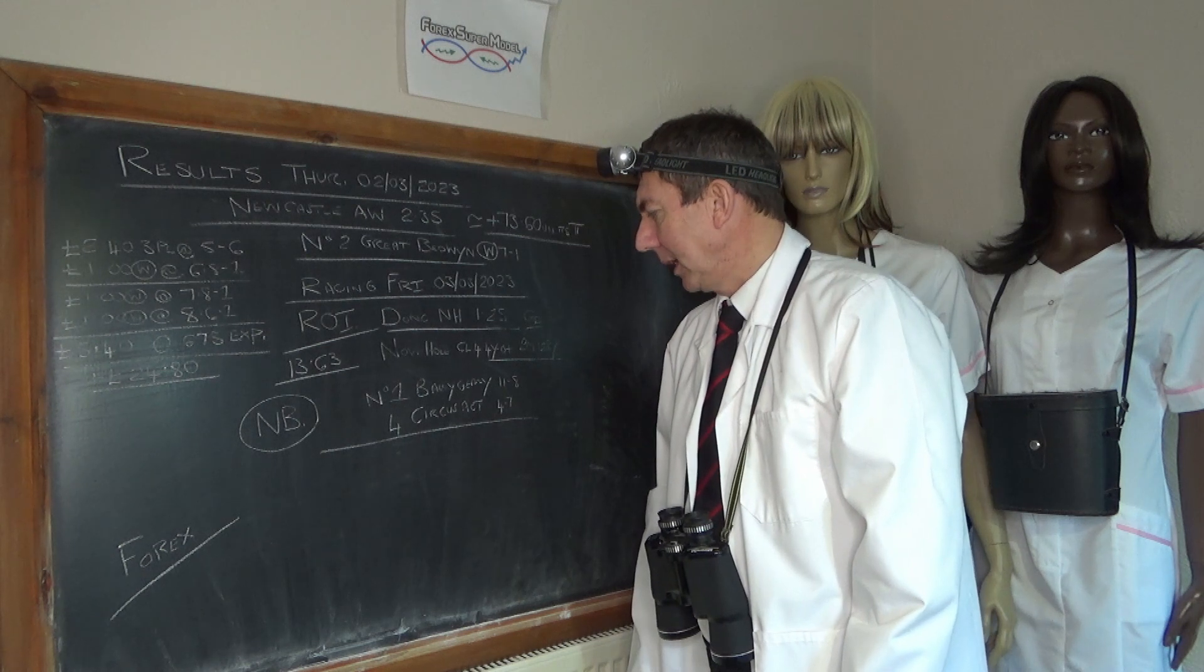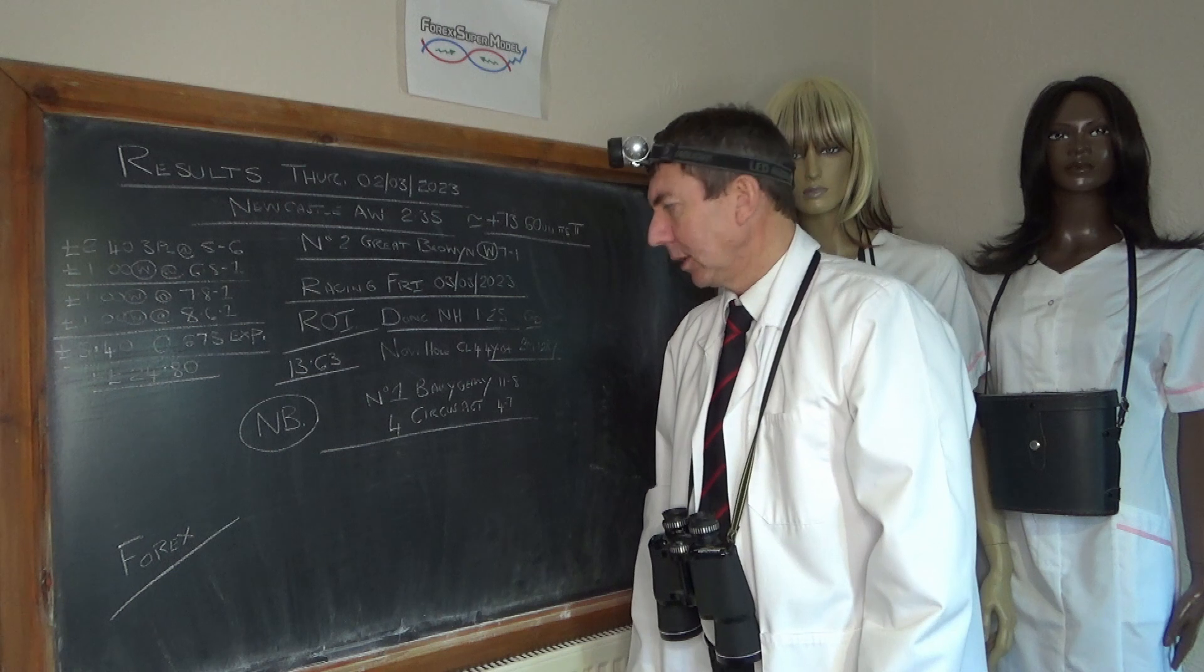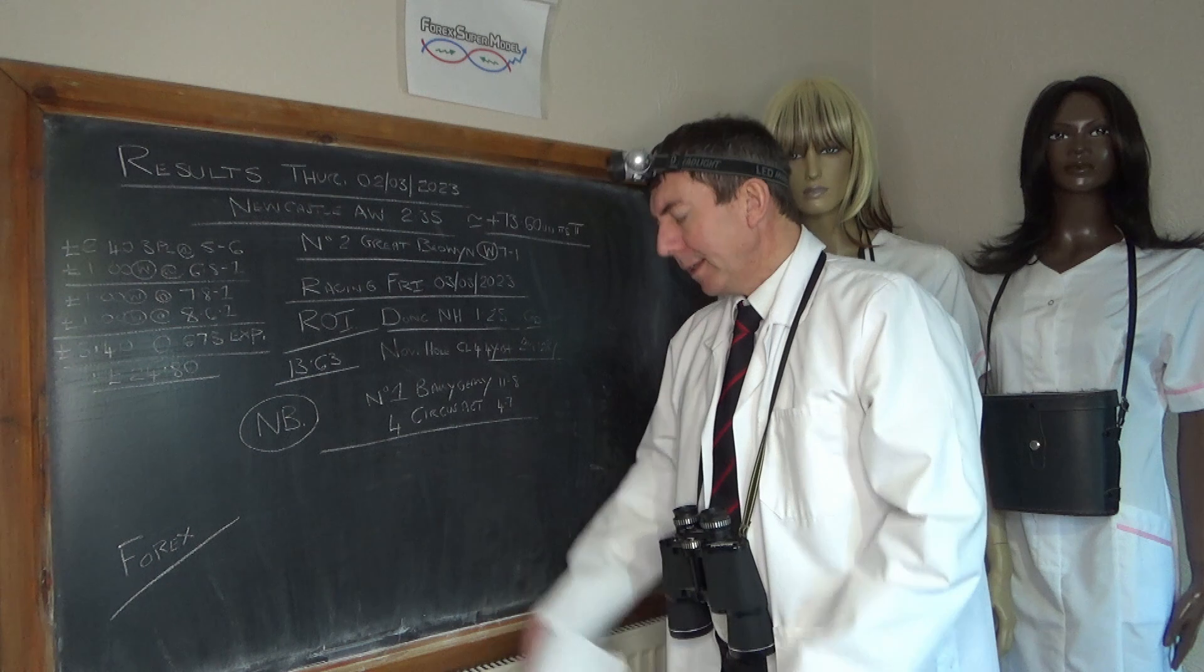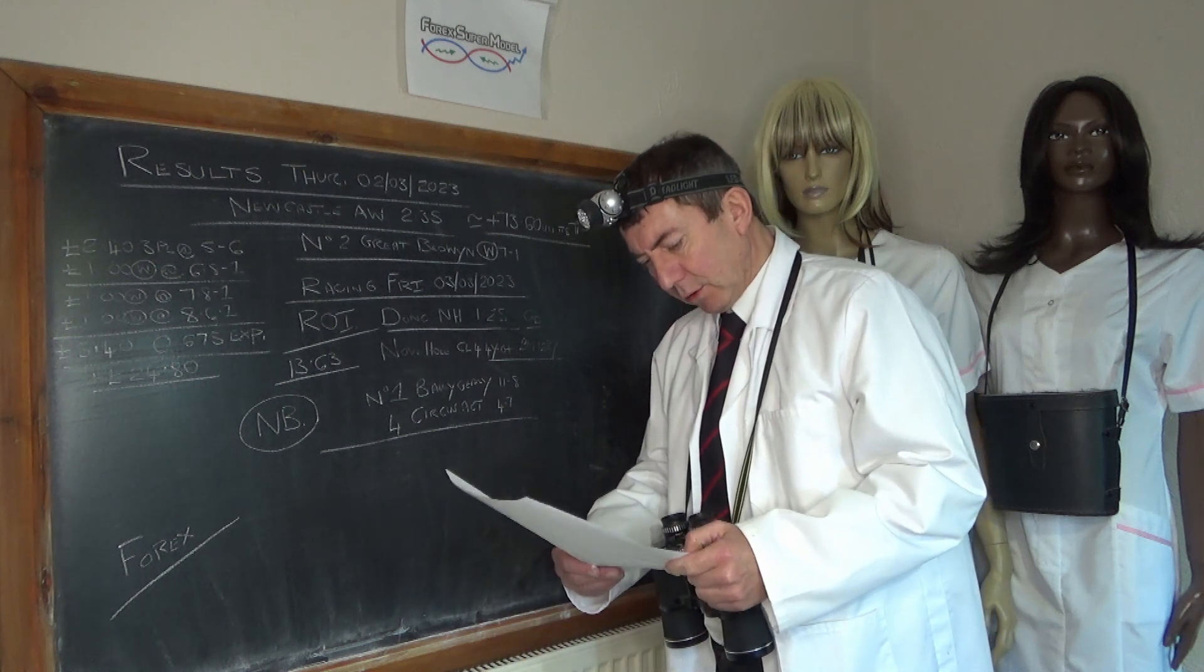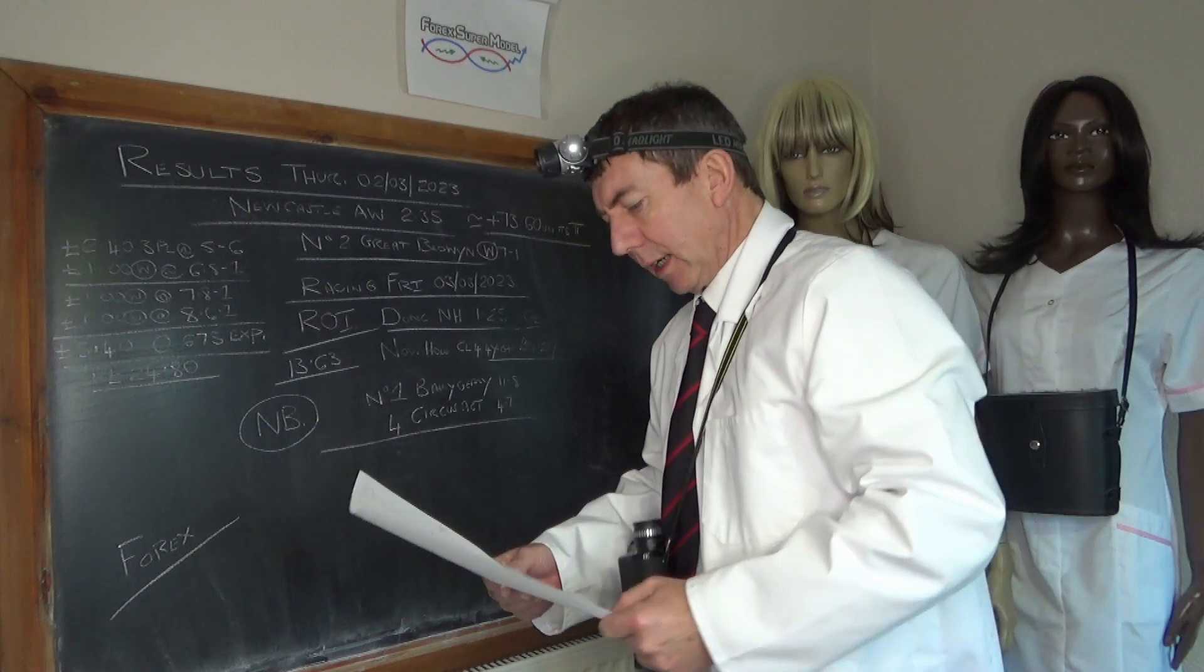Which is number one, Bally Geary, which is 11 to 8, you can't actually get 11 to 8 on it, or we can't. And this Circus Act, which is a slightly odd zone, number four. Now, what do we know about Circus Act?